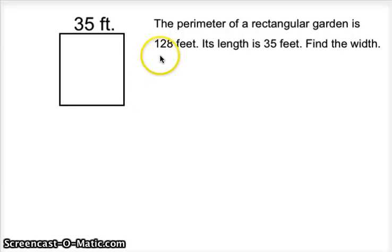We have a problem where we know the perimeter and we know one side, but we don't know the rest. The perimeter of a rectangular garden is 128 feet. Its length is 35 feet. Find the width.